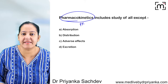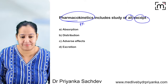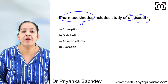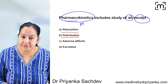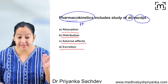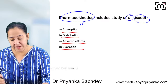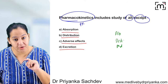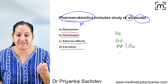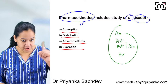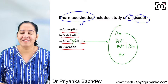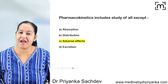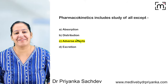Next question: pharmacokinetics includes all of the following EXCEPT — absorption, distribution, adverse effect, or excretion? The four branches of pharmacokinetics are absorption, distribution, metabolism/biotransformation, and excretion. Adverse effect is not included. So the correct answer is C — adverse effect.